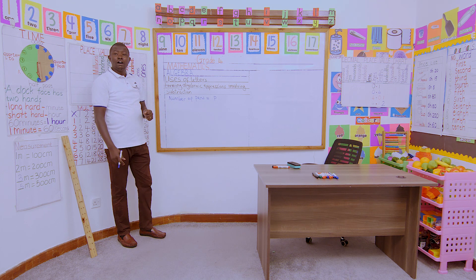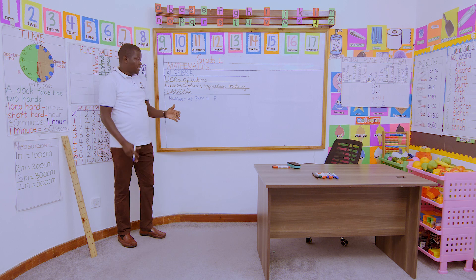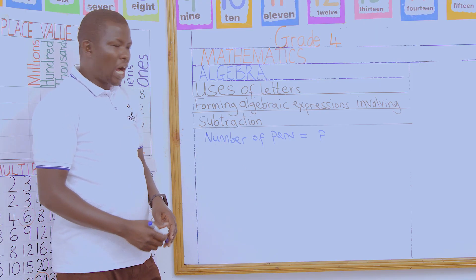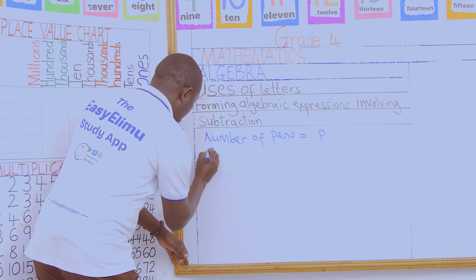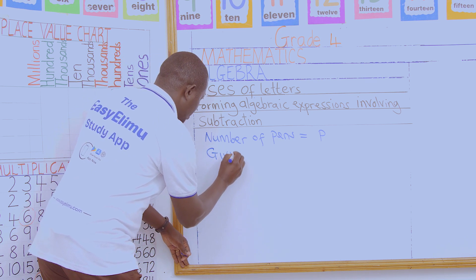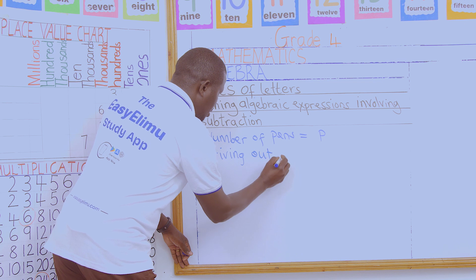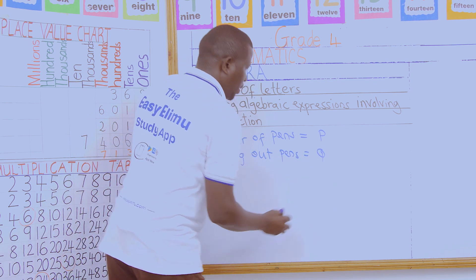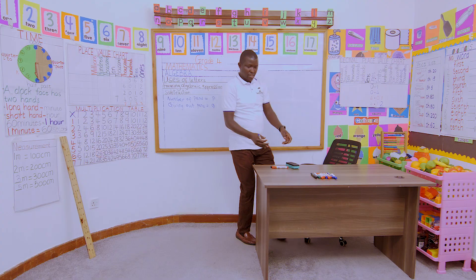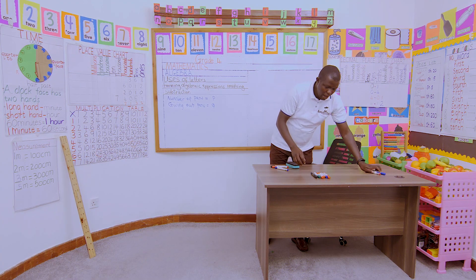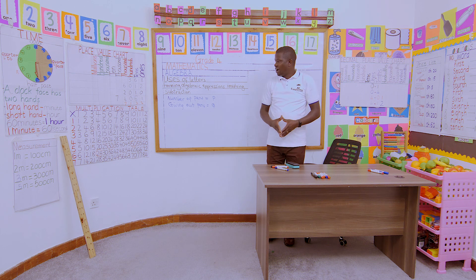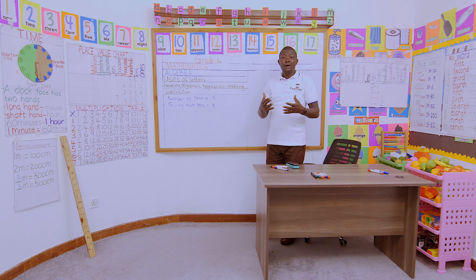Now, if I give out another number — that is Q pens — I am giving out Q pens. So from the many pens that I have, I give out Q pens. Now, what am I remaining with?